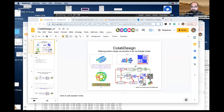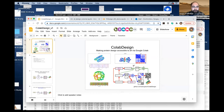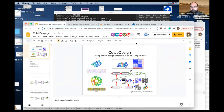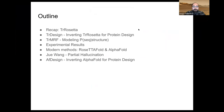Thanks Chris. Today I'll be talking about what I'm deciding to call 'collab design' — though I'm not sure if that's the name I'll go with. The idea is that there's been a lot of tools developed towards making different models accessible for protein design, and what I've been trying to do is make them all accessible through Google Colab. This includes TrRosetta and, more recently, AlphaFold, to see if we can use them for design.